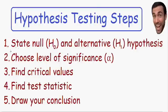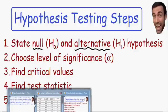The first step is to state the null and the alternative hypothesis. The null hypothesis is written with H sub 0 or H naught. The alternative hypothesis is written with H sub 1, or sometimes H sub A. Let's go back to our example.